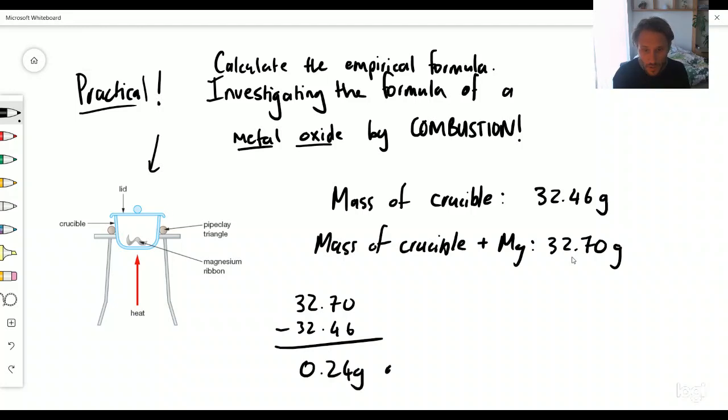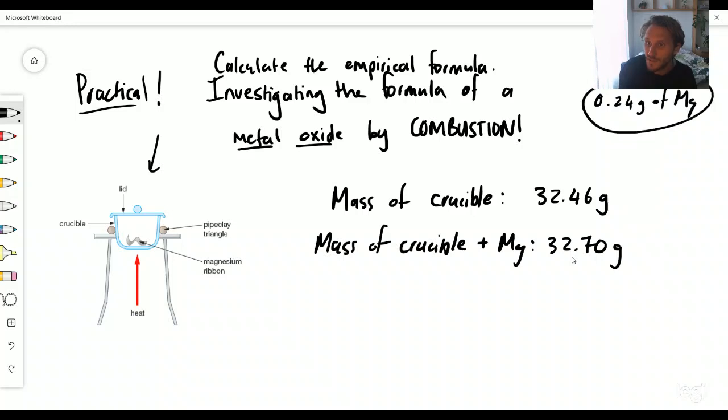This is going to give me 0.24 grams. This is what magnesium weighs - 10 centimeters that I chose to cut out of a magnesium ribbon weighs 0.24 grams. So that's how you'd find the mass of the magnesium ribbon. Let's put that piece of information just somewhere up here: 0.24 grams of Mg.